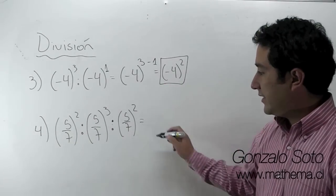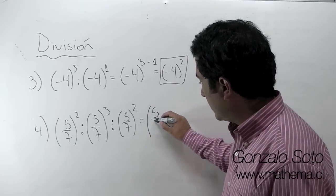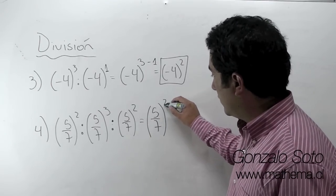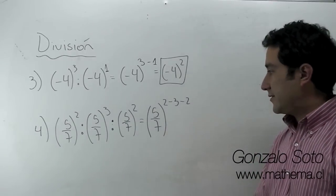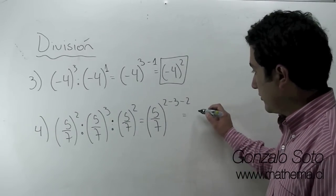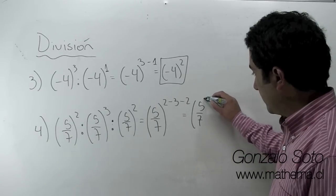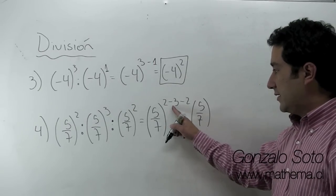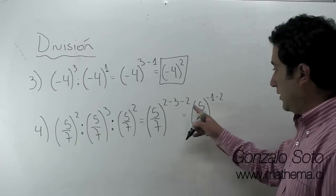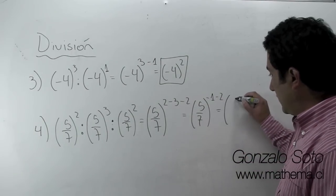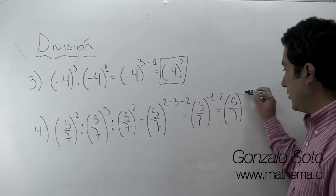Entonces tenemos división de potencias, la base es igual, por lo tanto restamos los exponentes. Entonces tenemos 5 séptimos: 2 menos 3 es menos 1, y me falta el menos 2. Entonces, 5 séptimos: menos 1 menos 2 es menos 3.